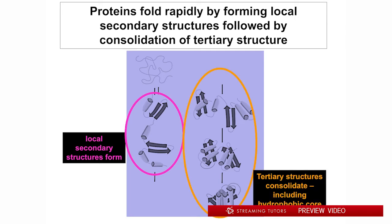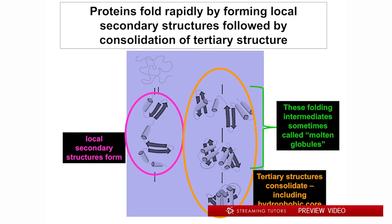Then in the next several milliseconds to perhaps a second for a small protein, these local secondary structures start to form larger chunks of secondary structure on their way to a mature tertiary structure. When that is going on, these more compact bundles are often referred to as molten globules — a graphic description of the fact that they're getting close to being folded up, but they're still moving around. And then at the end, on the timescale of a few seconds for a small protein, you have the stable, mature tertiary form of the protein.